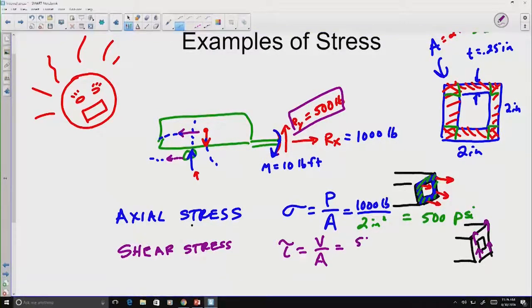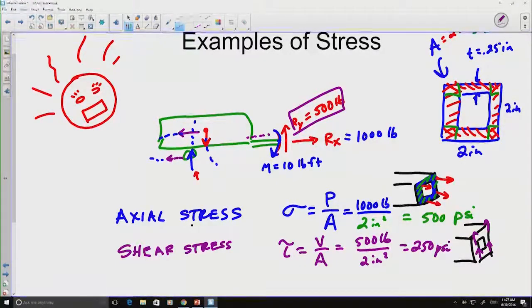Notice that's vertically in this particular case, which corresponds with our reaction force Ry of 500 pounds. So we take our 500 pound shear at that particular point. Notice the shear might vary if we move further down the line. We're looking right at the point, we're assuming there's a point at which the two are connected. We divide that by the two square inches and we get 250 psi of shear stress.